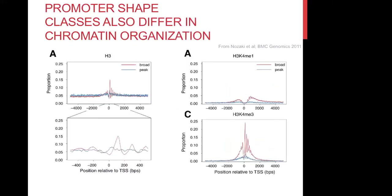One last point for the introduction: there are molecular differences in the function of these promoters visible at the chromatin level around them. Most of you are familiar with the fact that transcription initiates from a nucleosome-free region, and there is a very well-positioned plus-one nucleosome — the first nucleosome after the initiation site — which is typically expected to be well-positioned. But if you discriminate promoters by shape, you see this is only well-positioned in broad promoters, not in peak promoters, which might not be intuitive but is what happens. This is also true for H3K4 trimethylation, a very typical chromatin mark for active promoters. So there is something very basic distinguishing broad from narrow promoters.